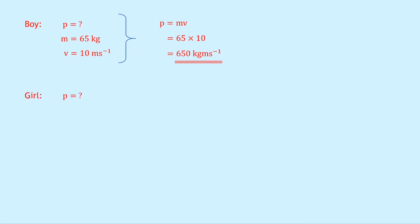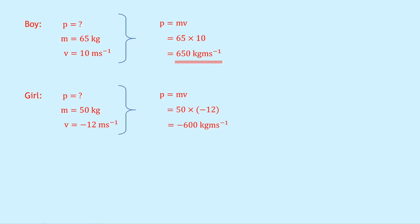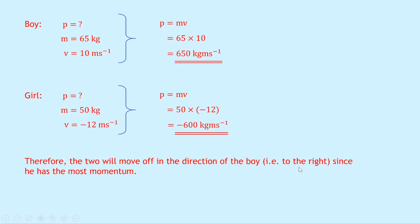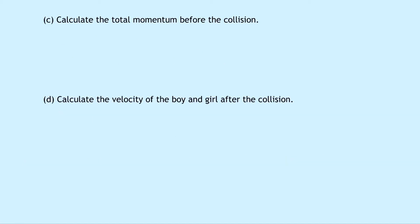For the girl: mass = 50 kg, velocity = −12 m/s (negative because moving left, with rightward defined as positive). Using p = mv gives 50 × (−12) = −600 kilogram meters per second. Comparing magnitudes, the boy has greater momentum (650 vs 600), so the two will move off in the boy's direction — to the right.